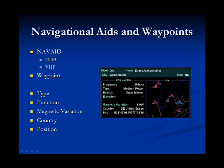The information for the navigational aid includes frequency, type, beacon, elevation, magnetic variation, country, and position. On the right-hand side shows a map centered on the navigational aid with a range of two nautical miles. Possible ranges include two, ten, or twenty-five nautical miles.